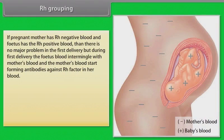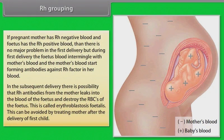If a pregnant mother has RH negative blood, there is no major problem in the first delivery. But during the first delivery, the fetus's blood intermingles with the mother's blood and the mother starts forming antibodies against RH factor. In subsequent deliveries, there is a possibility that RH antibodies from the mother leak into the blood of the fetus and destroy the RBCs of the fetus. This is called erythroblastosis fetalis, and it can be avoided by treating the mother after the first delivery.